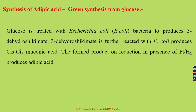In the green method, glucose is treated with E. coli bacteria to produce 3-hydroxy shikimate. The 3-hydroxy shikimate is further reacted with E. coli to produce cis-cis muconic acid. The muconic acid further undergoes reduction in the presence of platinum catalyst to produce adipic acid.